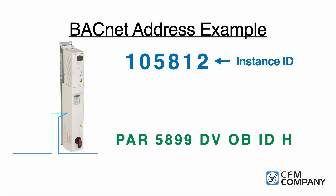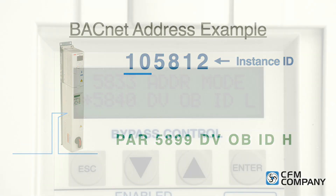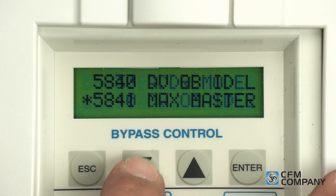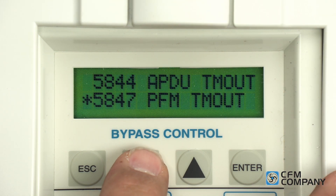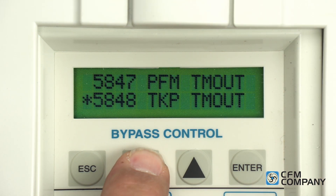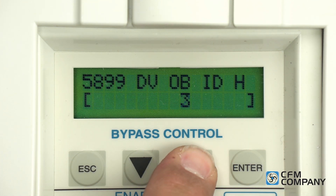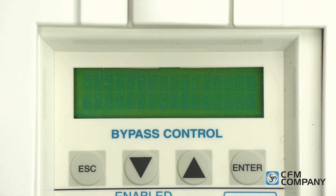Next, enter the drive's object ID high value. The object ID high value will be the remaining digits to the left of 5812, which is 10. Navigate down to parameter 5899 dvobidh and press enter to edit. Use the up arrow to enter 10 and press enter to save the value.